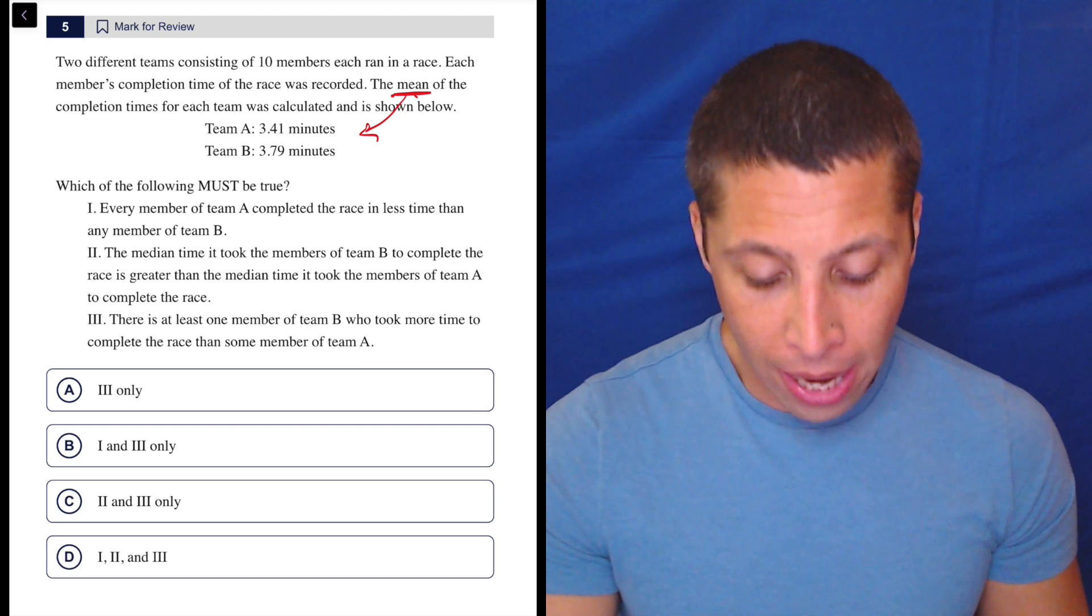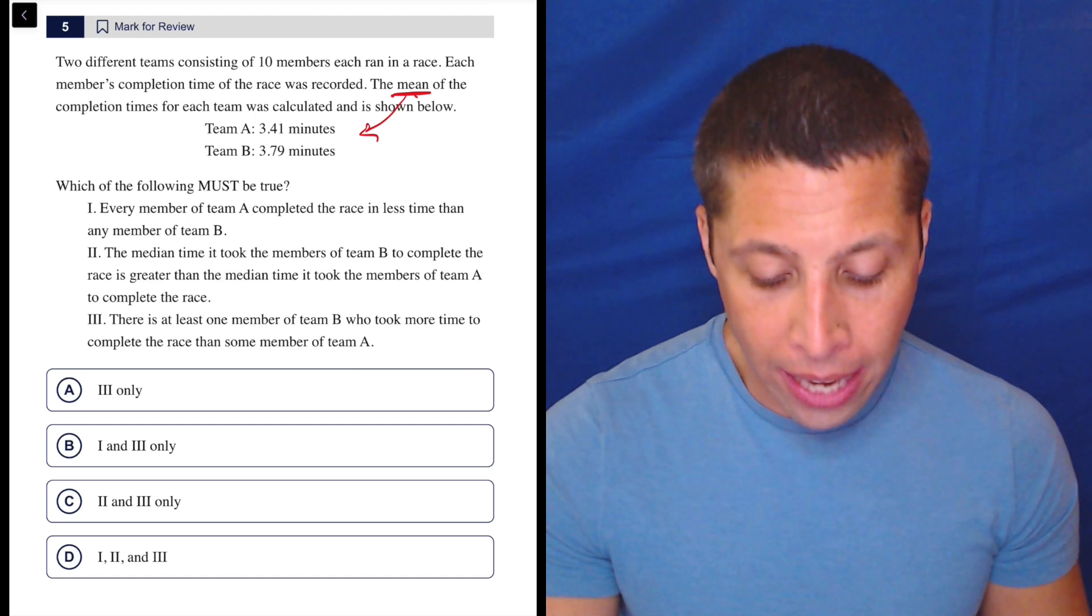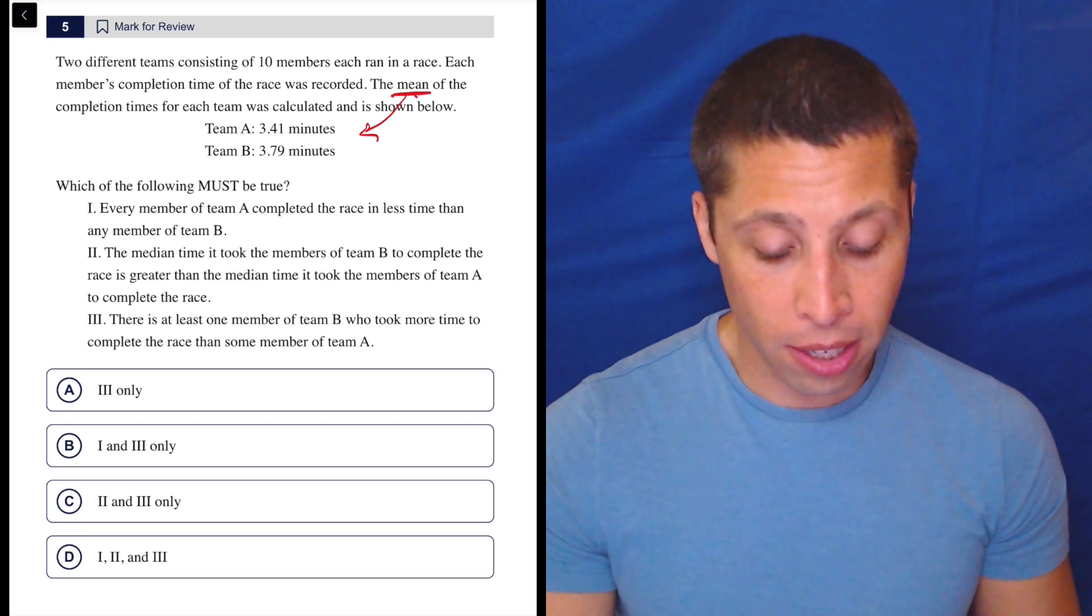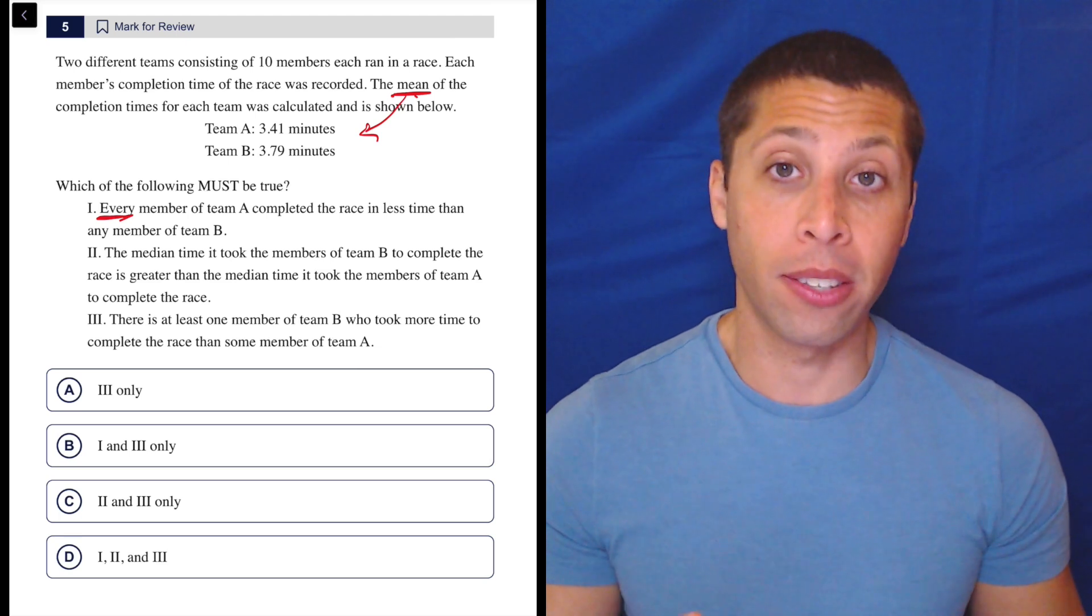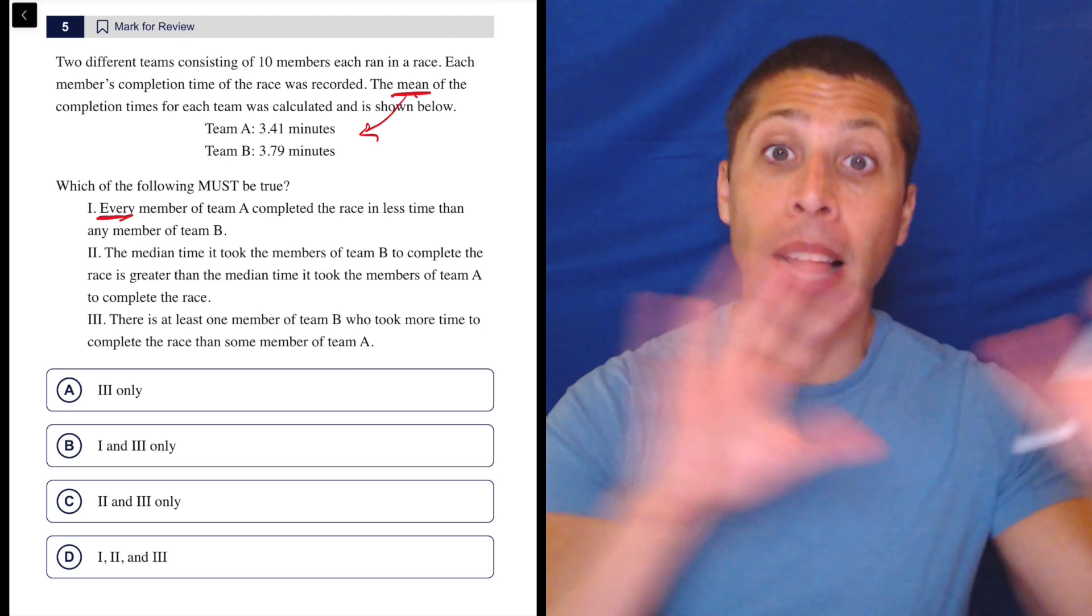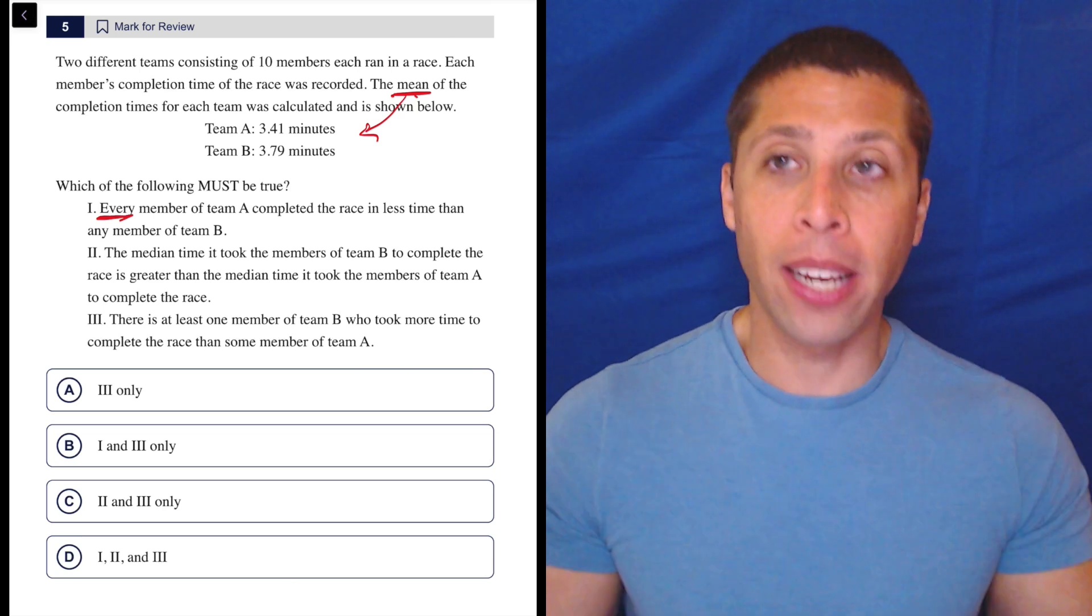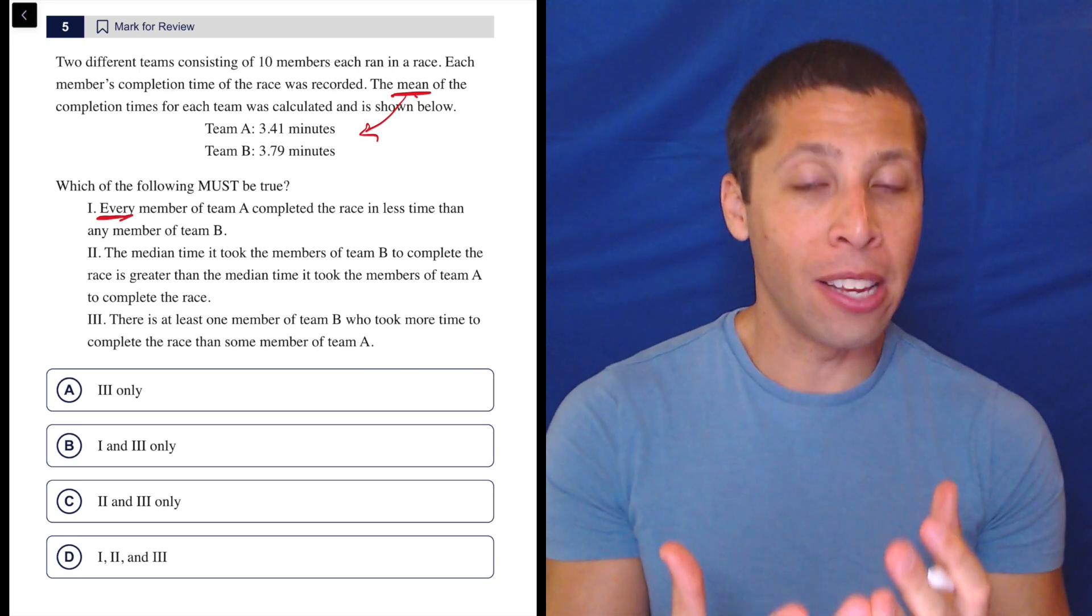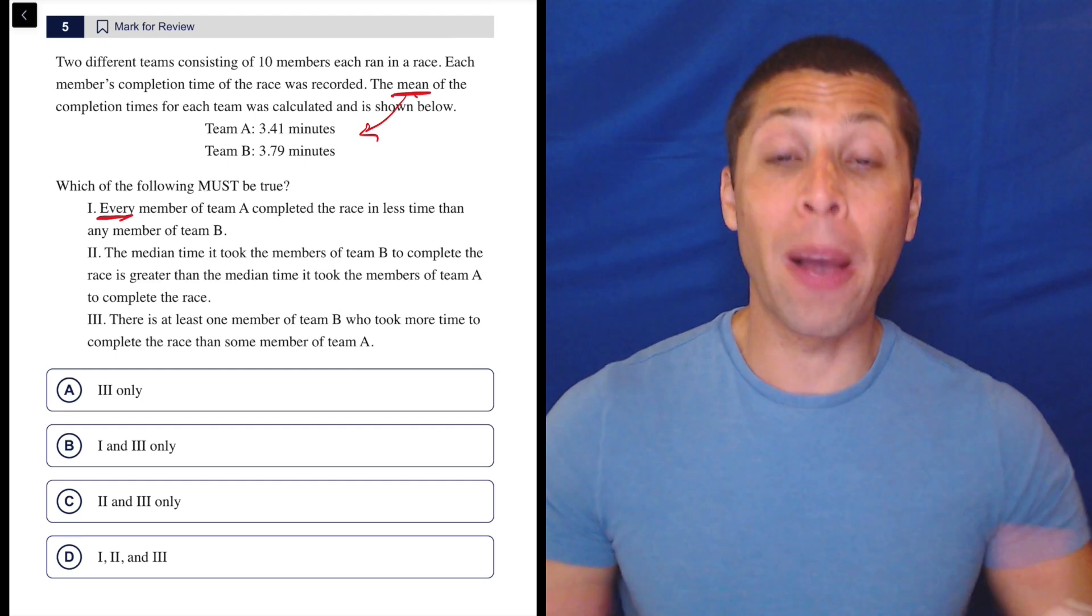So Roman numeral 1: every member of Team A completed the race in less time than any member of Team B. Just generally with statistics, whenever you see words like all or every, you should be skeptical because what statistics is doing is seeing a lot of data and, in this case, averaging it out, summarizing it.